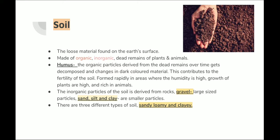The dead remains of plants and animals contribute to the fertility of the soil — they act as fertilizers. Humus is formed rapidly in places with high humidity, where there is rain and a high number of plants and animals. When those plants and animals die and fall on the ground, they turn into humus. Where there is more humus, plants and animals grow more — it is very fertile.